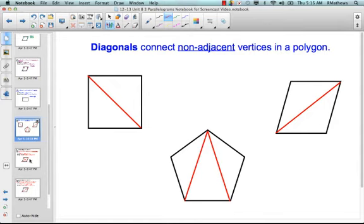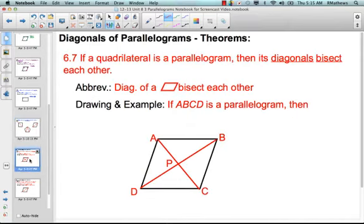If a quadrilateral is a parallelogram, then its diagonals bisect each other. So remember, bisecting means to cut in half. So we have AC is a diagonal in parallelogram ABCD, and DB is also a diagonal, and they meet at point P. So if the diagonals bisect each other, that means AP is going to be congruent to PC, and DP is going to be congruent to PB.